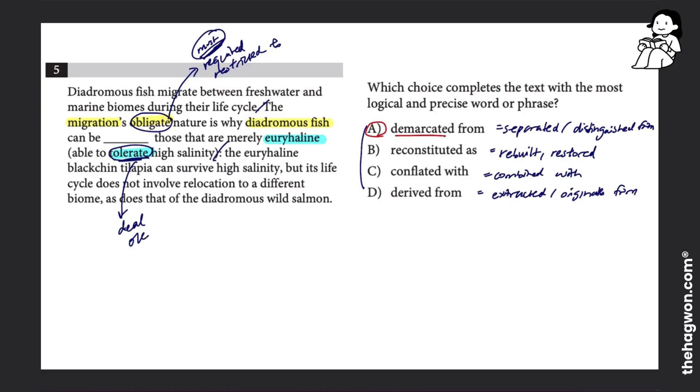So if I put answer choice A, demarcated from, it means that diadromous fish we can separate or distinguish from, or we can differentiate from, the euryhaline fish because the diadromous fish must do this migration.